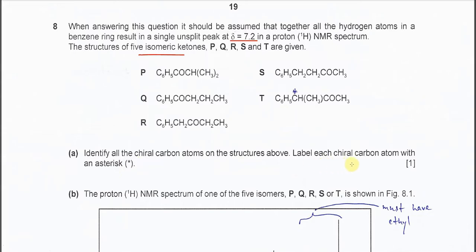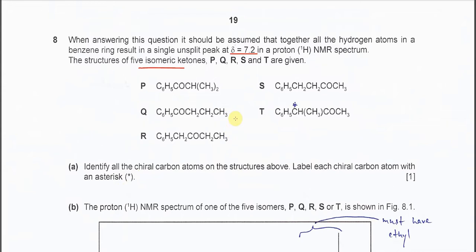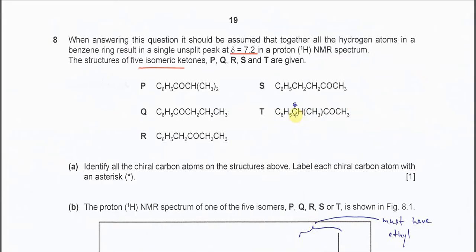Label the chiral carbon with an asterisk. If you look carefully, only T gives one chiral carbon — only T has one chiral carbon. This is because that carbon is bonded to four different groups, making it a chiral carbon. This is what you learned in AS.